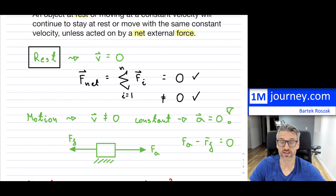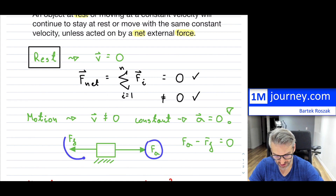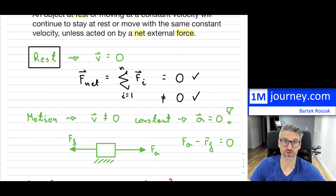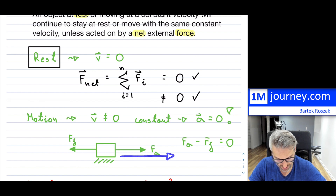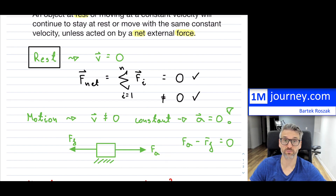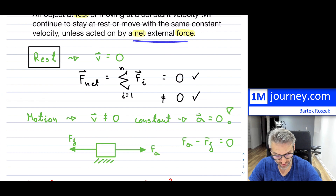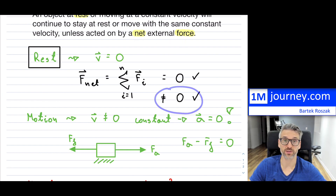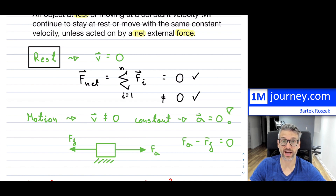When you have constant velocity, it doesn't mean you're no longer applying any forces — there are forces, they're just canceling each other out. You're applying a force that counteracts any force trying to slow it down, so you continue on your way. If you make the applied force bigger, the net external force will no longer be zero; you've overcome the resistance, and now the object can actually change its velocity — it accelerates.